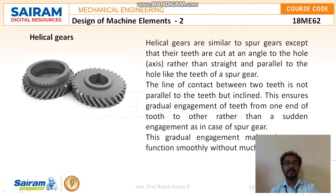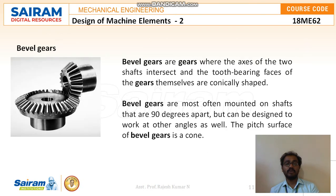Helical gears are similar to spur gears except that their teeth are cut at an angle to the axis rather than straight and parallel to the axis like spur gear teeth. The line of contact between two teeth is not parallel to the teeth but inclined, which ensures gradual engagement of teeth from one end to the other rather than the sudden engagement of a spur gear. This gradual engagement makes helical gears function smoothly and without much noise.